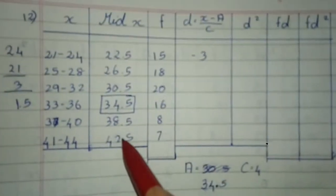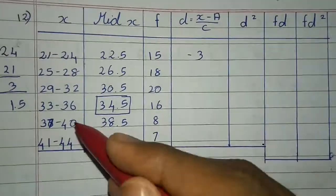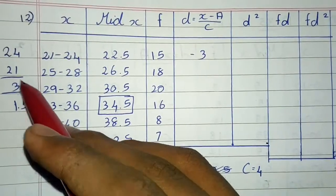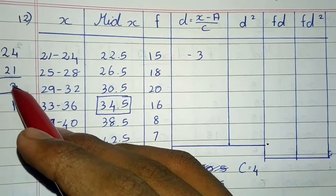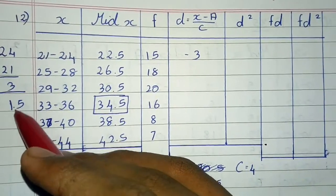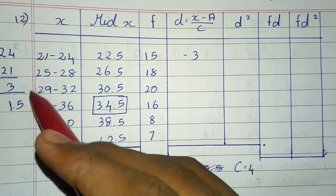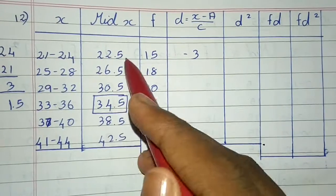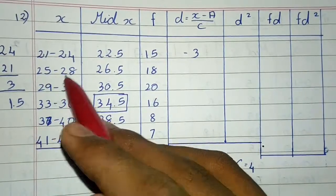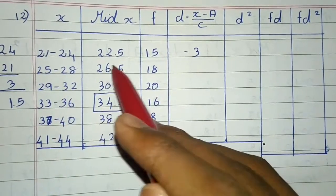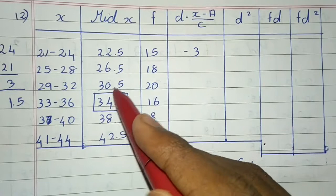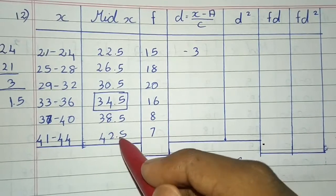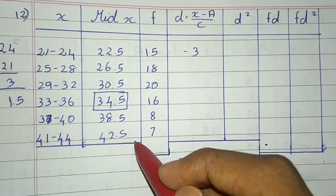First question: we will find the mean. A is equal to 3 divided by the answer, 1.5. Then midpoints are 21, 22, 25 — 25 is equal to 1.5 — 22, 35, 35, 35, 35, 32, 35, 25.